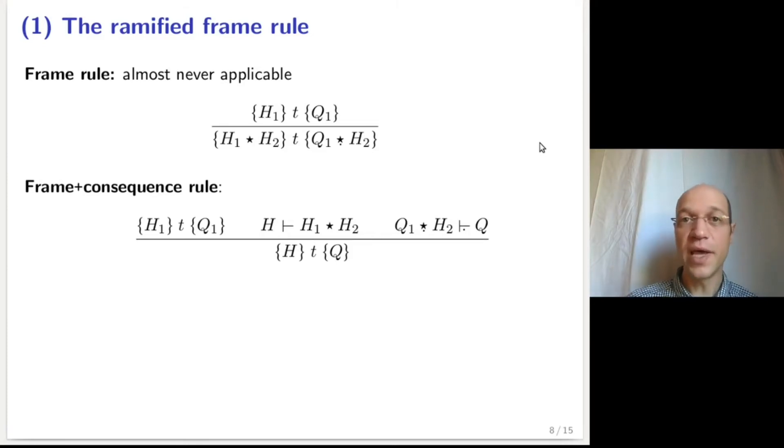To prove a triple htq, derivable from a triple h1tq1, one has to show that the precondition h decomposes as h1 star h2, and then shows that the post-condition q1, when extended with h2, recovers the post-condition q.